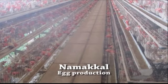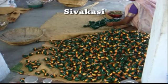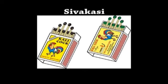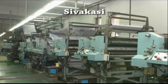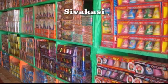Namakkal is one of the main sources of egg production in India. Sivakasi is a major center of fireworks, safety match production, and offset printing in India. Over 60% of the firework production in India is contributed from Sivakasi.